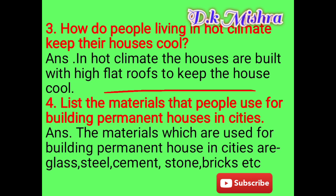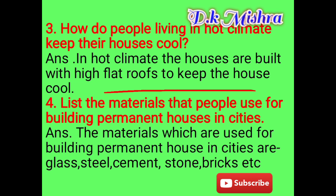Question four: What are the materials used for building permanent houses in cities? The materials used for building permanent houses in cities are glass, steel, cement, stone, bricks, etc.